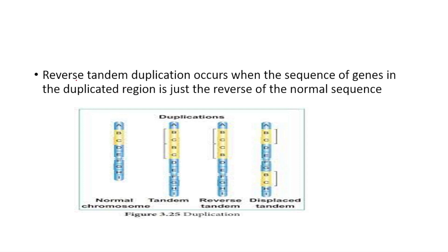Reverse tandem duplication occurs when the sequence of the gene in the duplicated region is just the reverse of the normal sequence. For example, if BC is the normal sequence, the duplicated region appears as CB — that is, the reverse order.